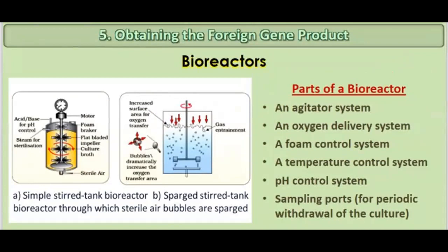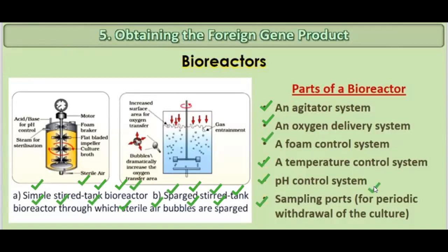The basic parts of the bioreactor include a simple stirred tank bioreactor and a sparged stirred tank bioreactor to which sterile air bubbles are sparged. The parts of the bioreactor are: an agitator system, an oxygen delivery system, a foam control system, a temperature control system, a pH control system, and a sampling port for periodic withdrawal of the culture.